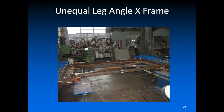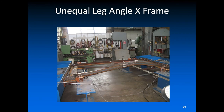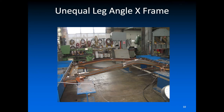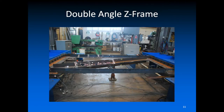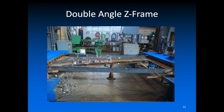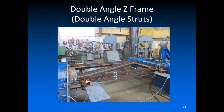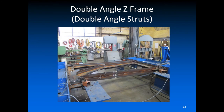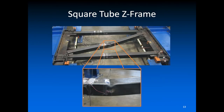Looking at the unequal leg angle X-frame, it does something similar — the diagonal buckles and the nearby strut buckles too. We kept twisting this one and ended up putting the top strut into compression as well, creating another buckled member. For the double angle Z-frames, one buckles in the plane of the frame with a lateral shift, and in another we see the compression diagonal buckling upward, with even a little local buckling or crinkling of the member in the center. Finally, we have a local buckling failure in the square tube, where the slender cross section relative to its length causes crinkling — a good example of local buckling failure.